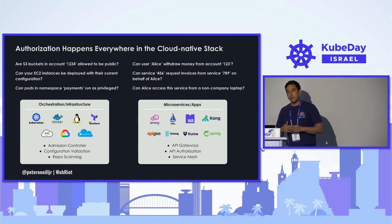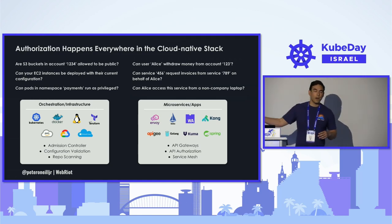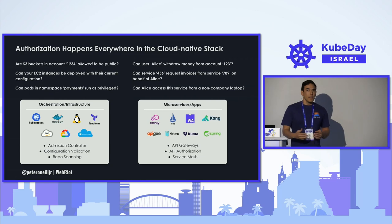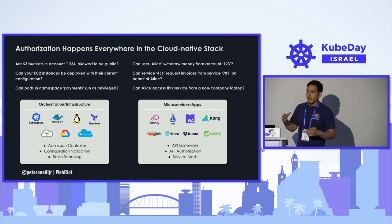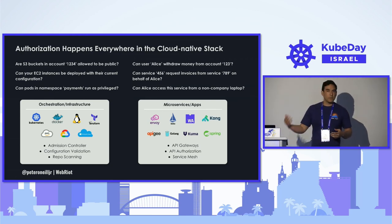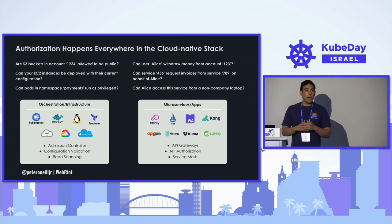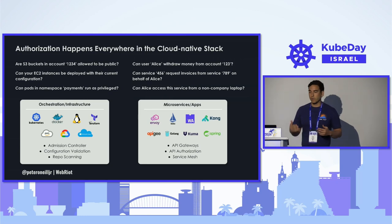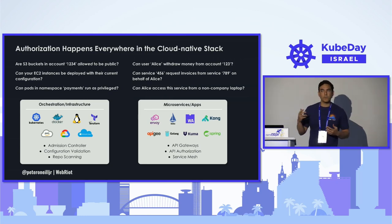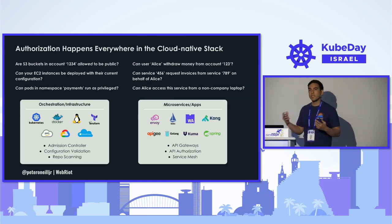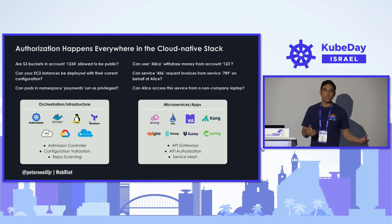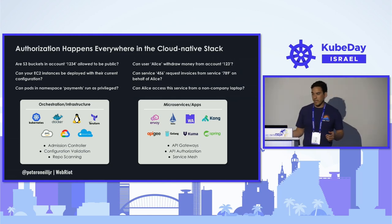On the application side, you can think of this as when you are defining your applications and building these services — what exactly are you going to allow your users to do when they are interacting with the system? These are all different types of authorization decisions that need to happen, both on the infrastructure side and on the application side.